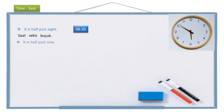Another example: it is half past nine. But we are going to say it as nine and half. It is: saat, nine — dokuz, and half — buçuk. It is half past nine: saat dokuz buçuk. That's it.